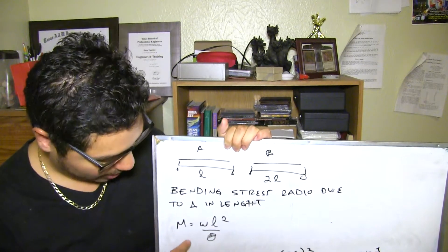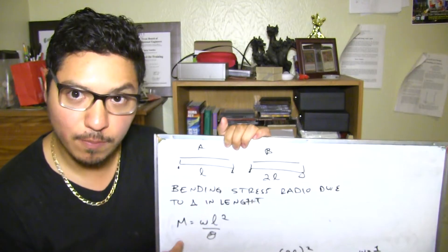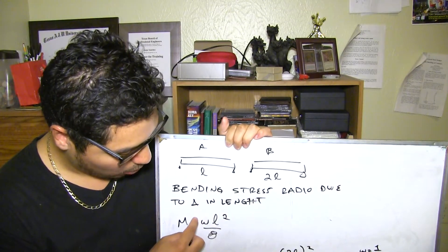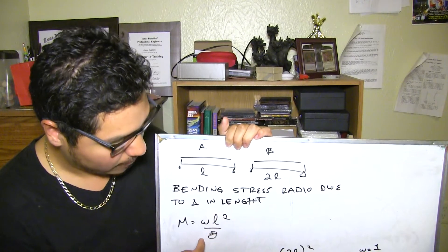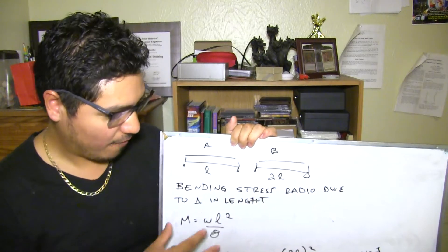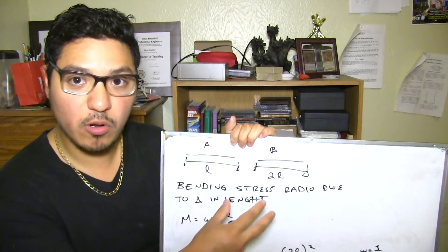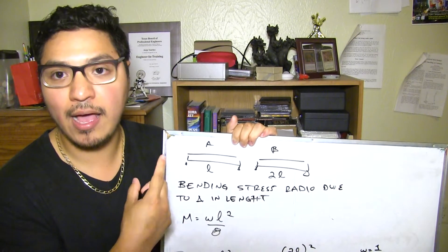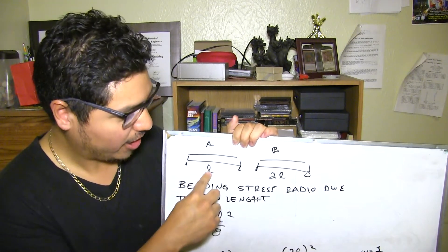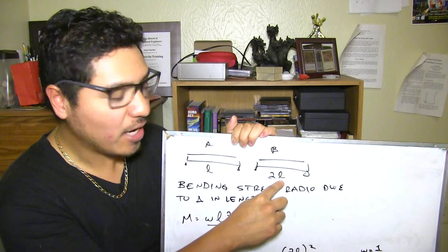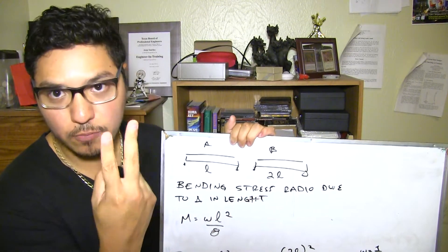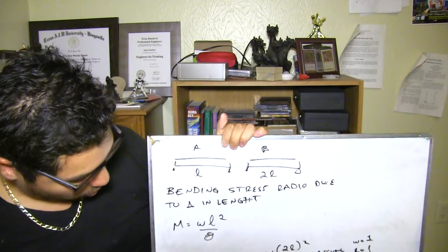So basically we have here the moment equation for simply supported beams. That is moment equals the load times L squared over 8. What I did for this type of thing, I set them up both equal and then I assume a length of 1 for here and a length of 1 as well. So 2 times L is going to be 2. And then the load was the same, W.